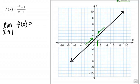What Y value am I approaching? So I'm approaching a Y value of 2, right? As I get closer and closer to the X value of 1, I approach the Y value of 2.